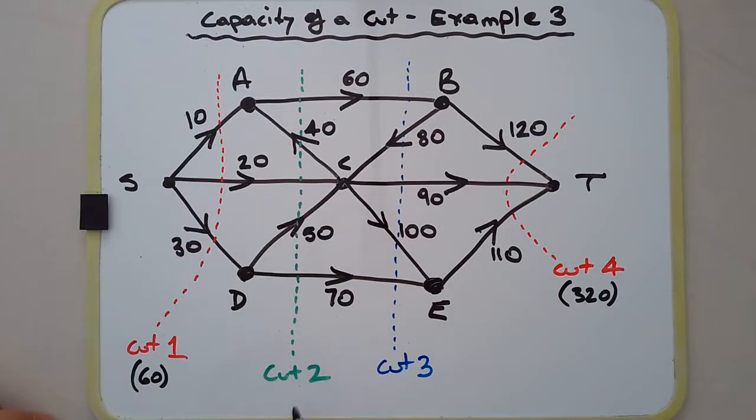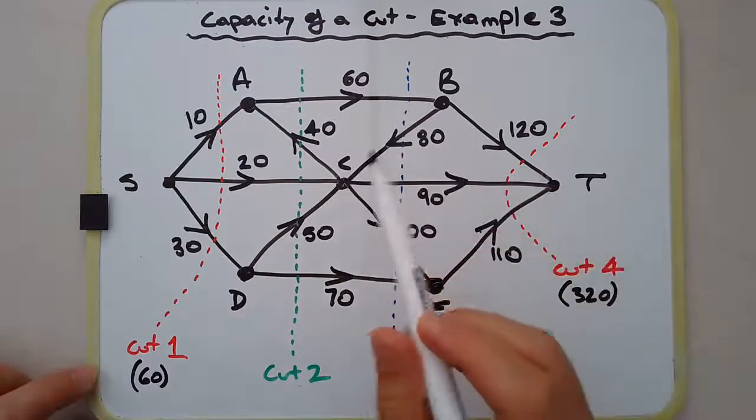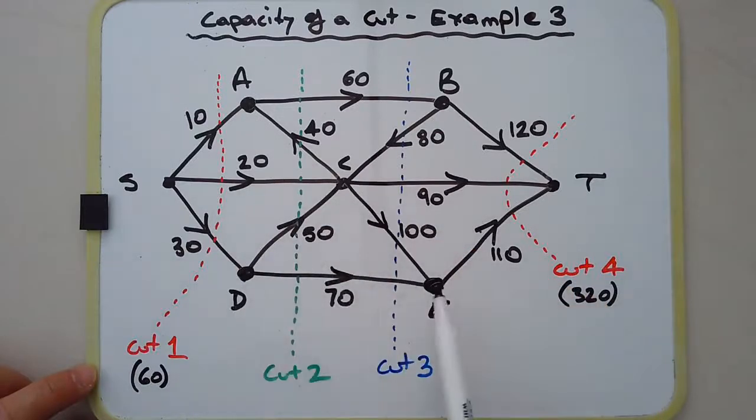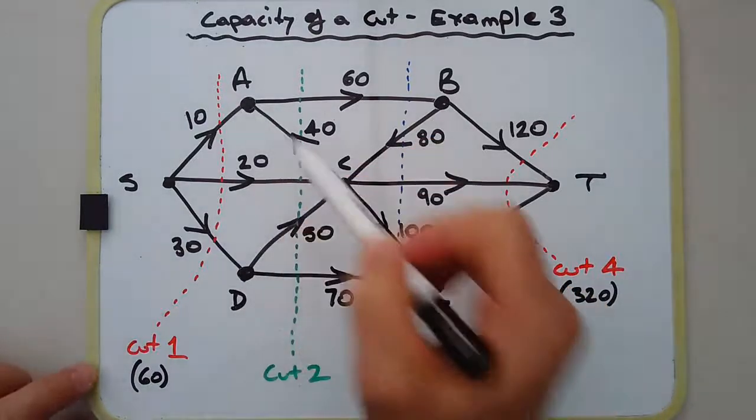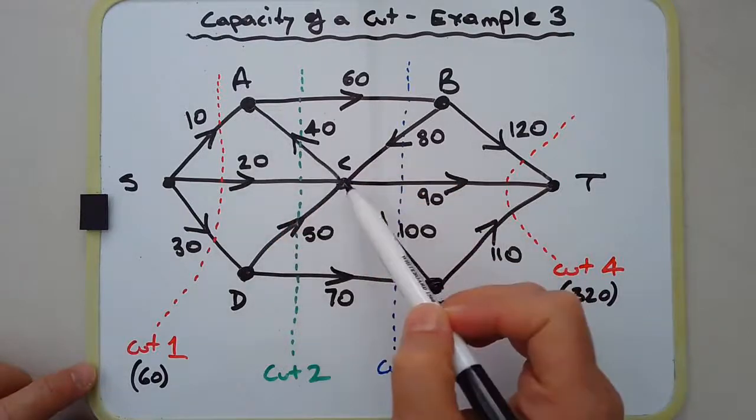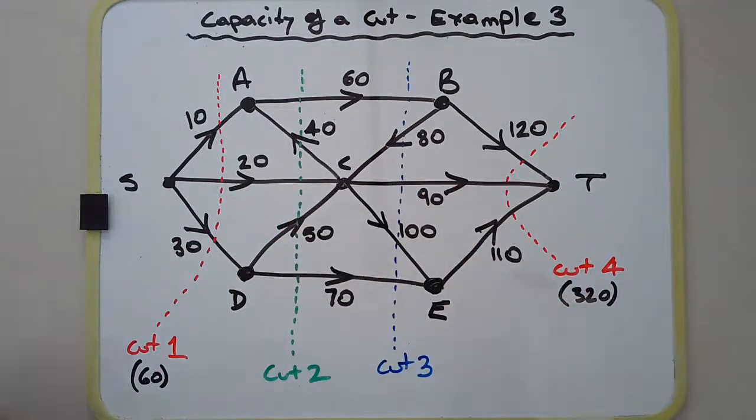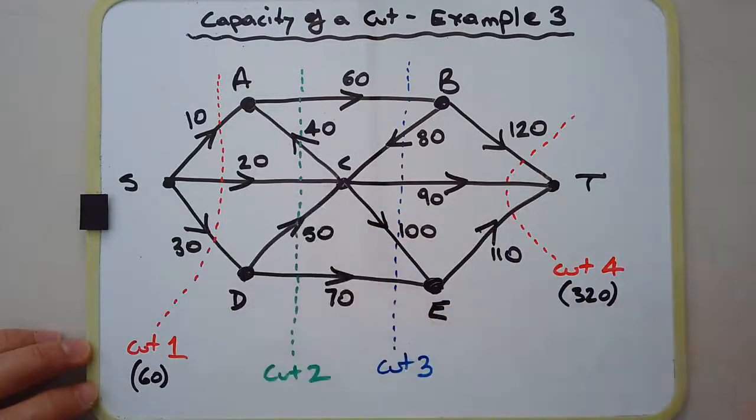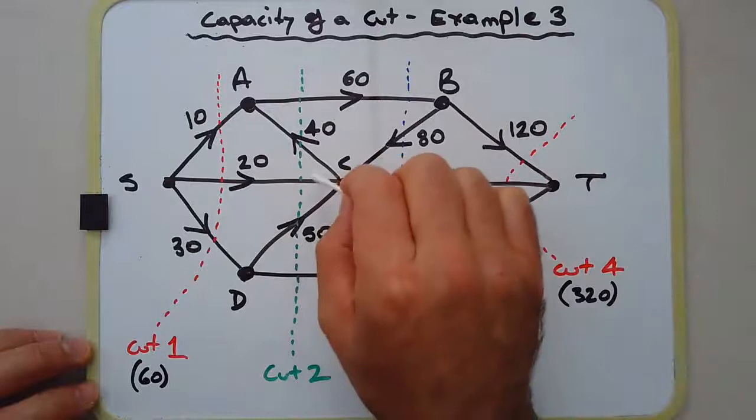Let's have a look at cut number two. We're cutting AB, AC, DC, and DE. At this point, you should probably determine that AC is in fact unnecessary. The reason for that is AC is an outflow of C, but we're already cutting off the inflow to C. Let me demonstrate this.